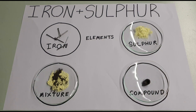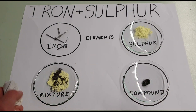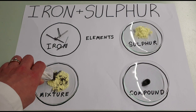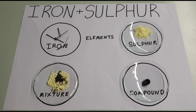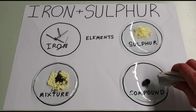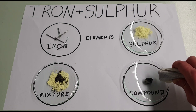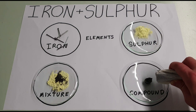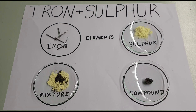The last property to test is the magnetic ability. I have my magnet, and as you saw earlier I used that to extract the iron from the mixture. Now there's the test for the compound. As you can see it does still retain a little bit of a magnetic property, but it is not shooting to the magnet as the iron filings did before.